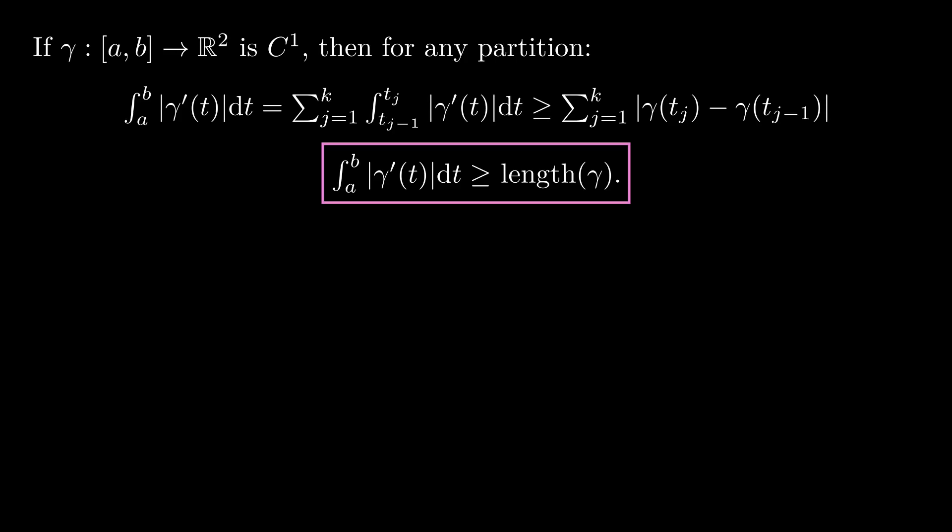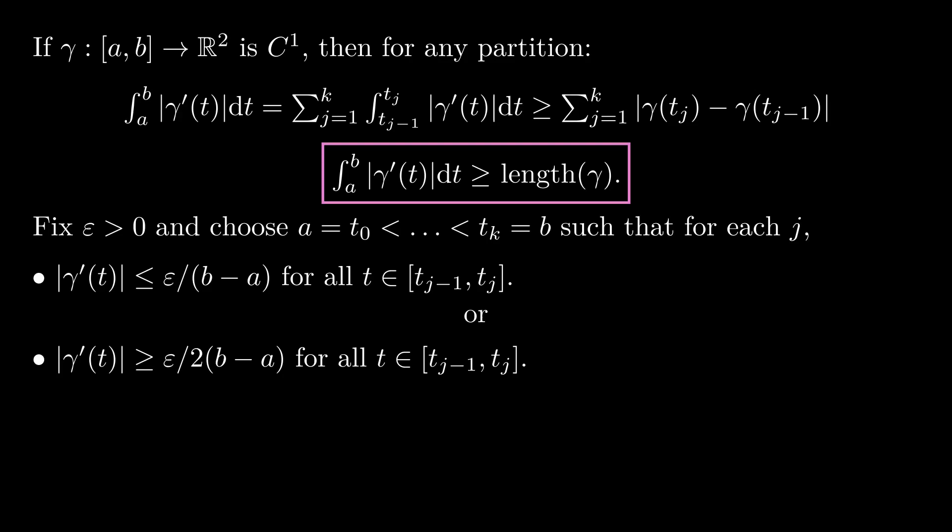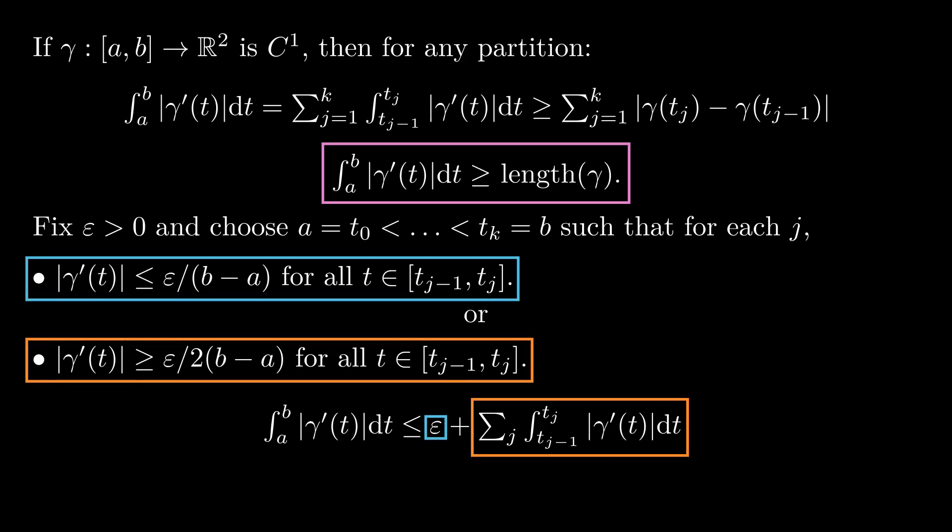Now, for the other inequality, for each epsilon we first construct a partition that breaks the curve into two parts. In one part, the velocity is less than epsilon over b minus a. In the other part, the velocity is always at least epsilon over 2 times b minus a. This divides the domain of the curve into the portion when the particle goes very slow, and the portion where the particle never goes too slow. The integral over the intervals of the first kind is at most epsilon, so we can focus on the intervals of the second kind.